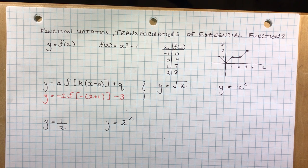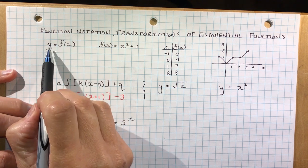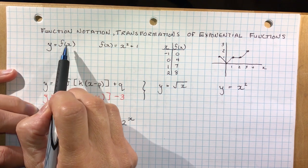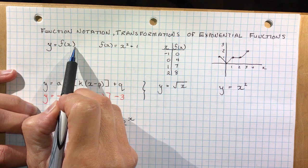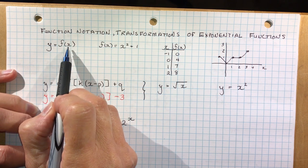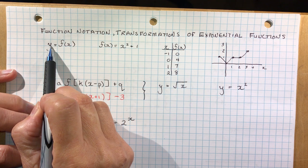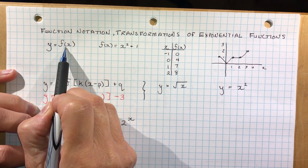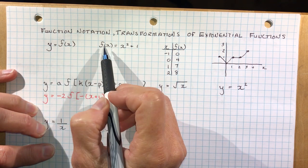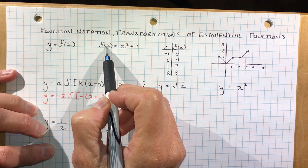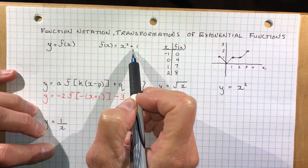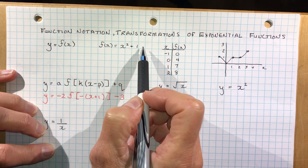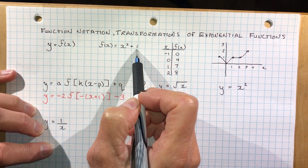I'm going to talk first about what function notation is. When we say y is equal to f at x, f at x is function notation. In essence, all we're doing is replacing y with some function f at x. So here if I said f at x is equal to this equation, you'd say okay, that's like y is equal to this. I know this is a parabola — it's been shifted up one, that's all.